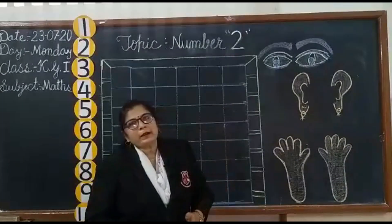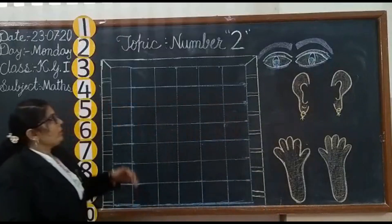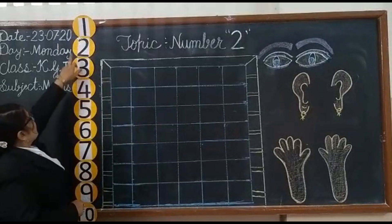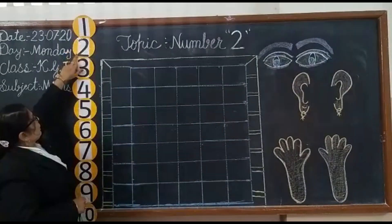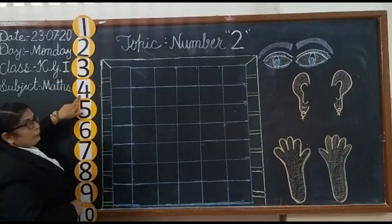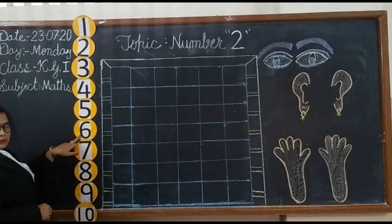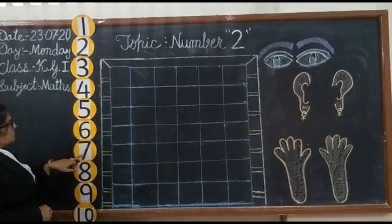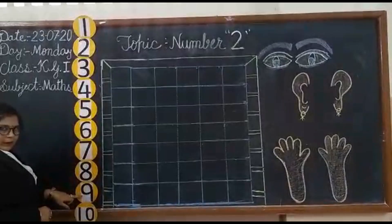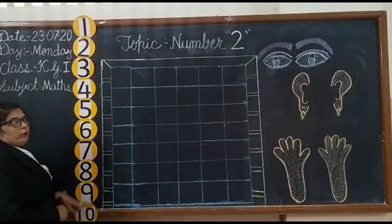Before starting it, we will recite the numbers from 1 to 10. Say with me. 1, 2, 3, 4, 5, 6, 7, 8, 9, 10. Repeat it one more time.